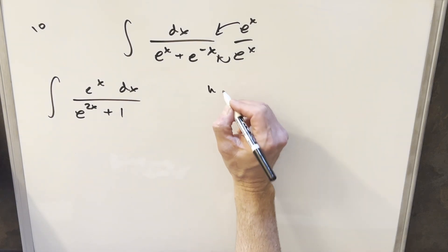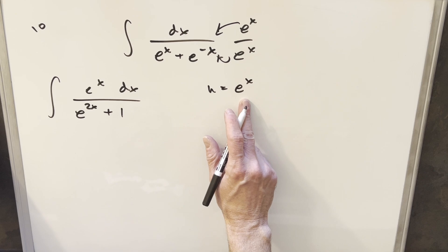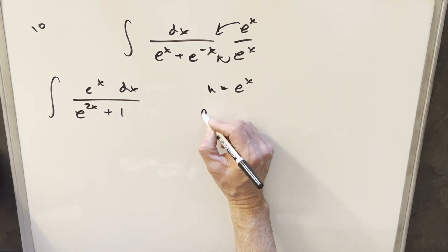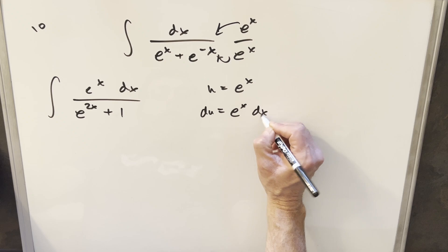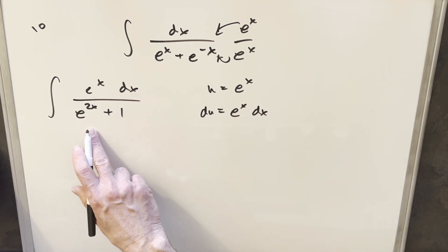But now from here, we're in really good shape for a u substitution. If I just make my u equal e to the x, then if I take the derivative, we'll have du is just going to be e to the x dx. And that's perfect because that's exactly what we have here in the numerator.